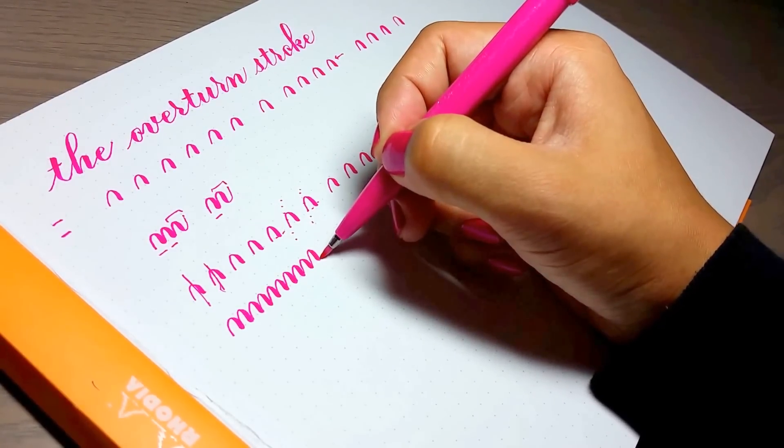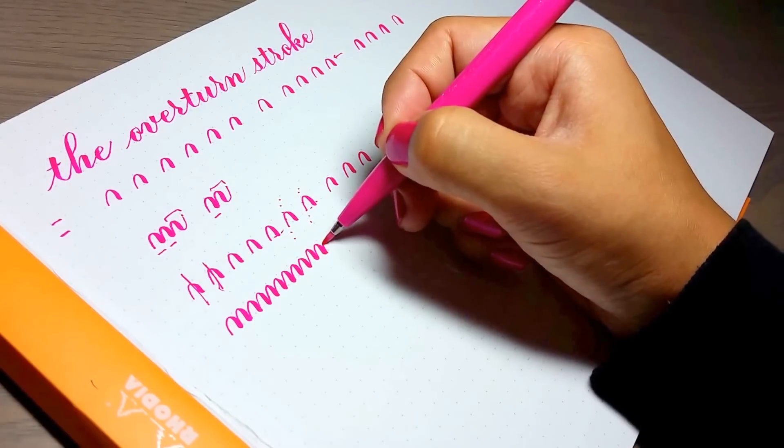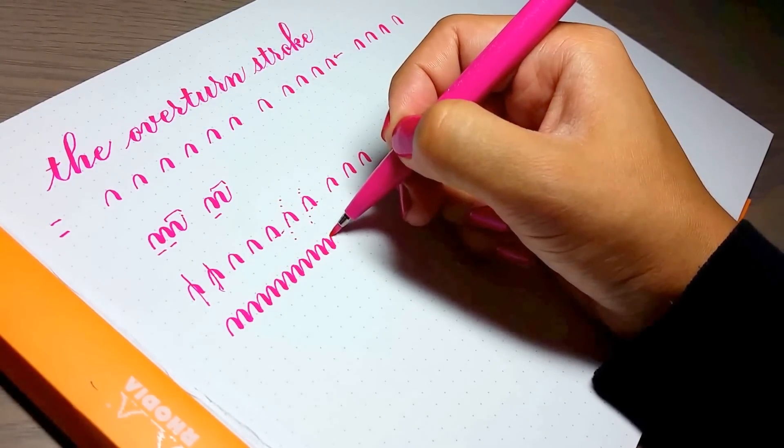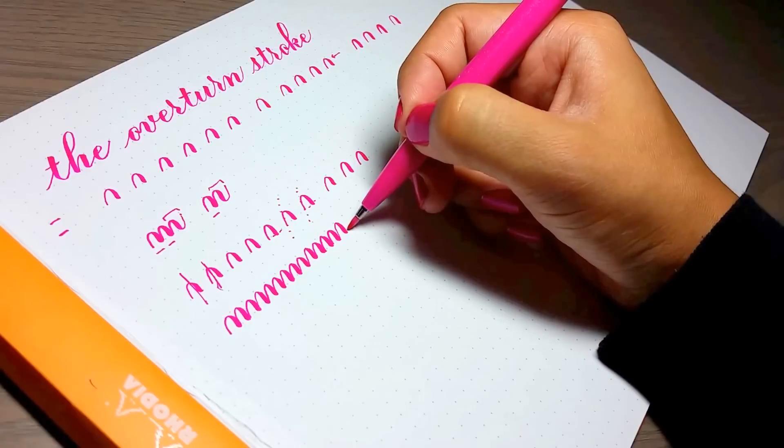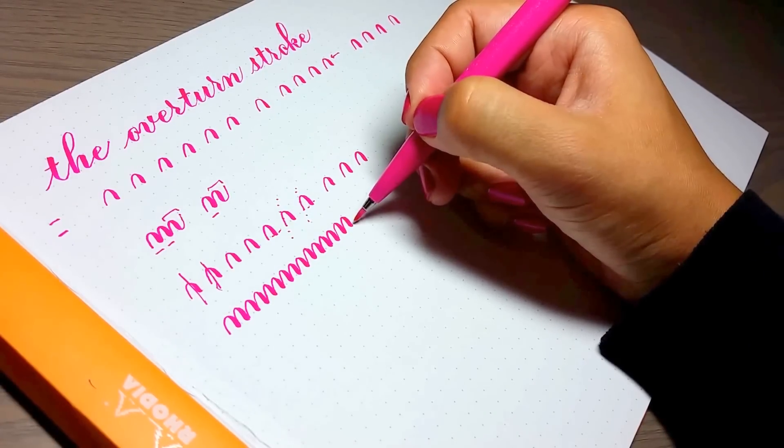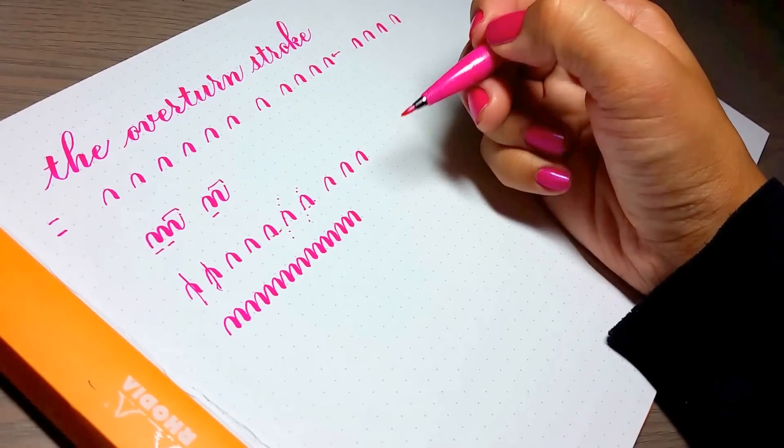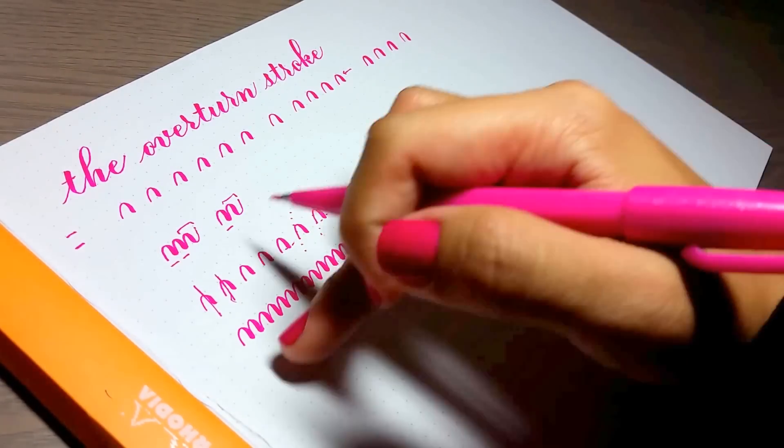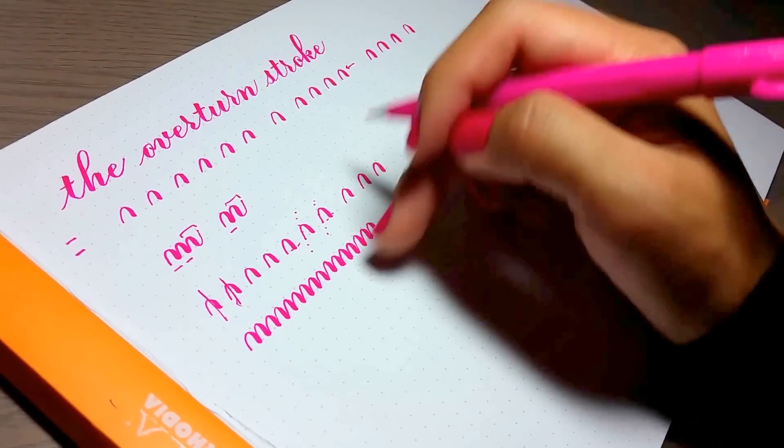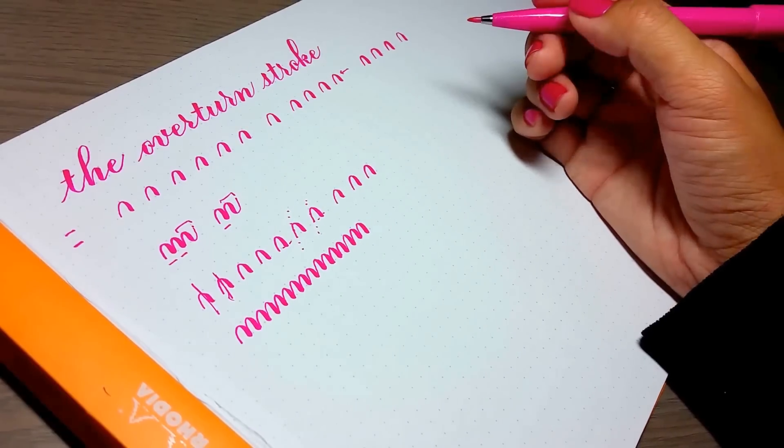And then you can also connect them together. It's like a bunch of M's and the key to connecting them is that you're actually not connecting them in one fluid motion. See how I'm lifting up my pen and you've probably noticed with my other videos that I do lift up the pen even though the goal is to make it look like a connected stream of strokes here.